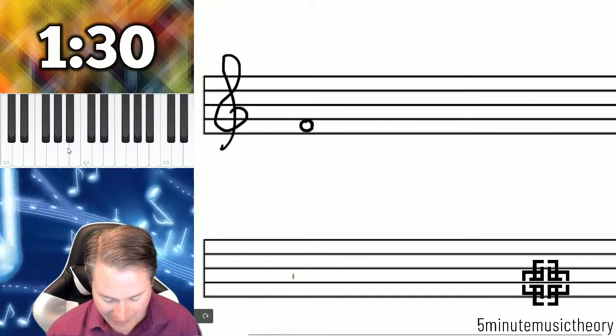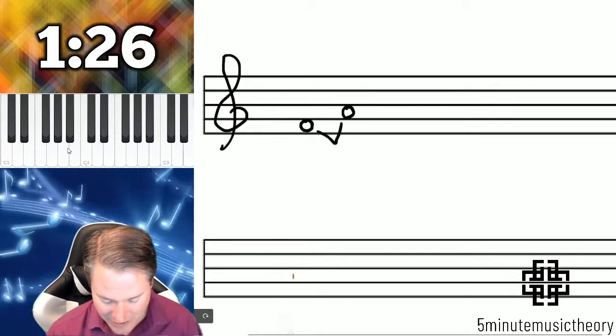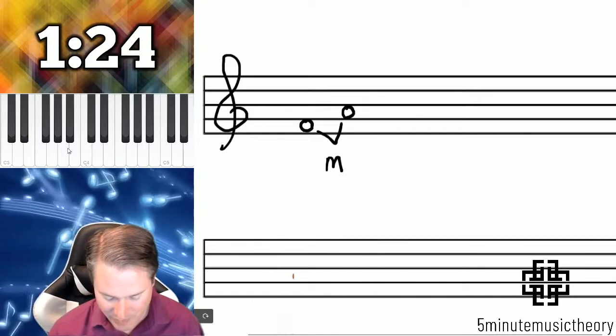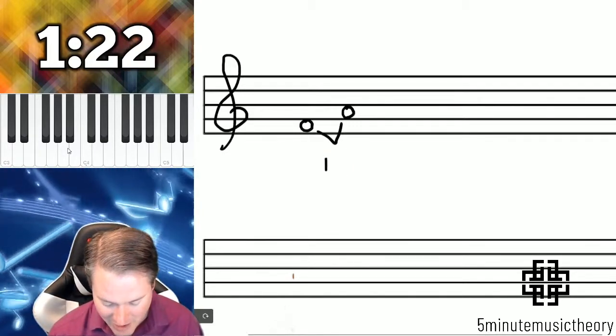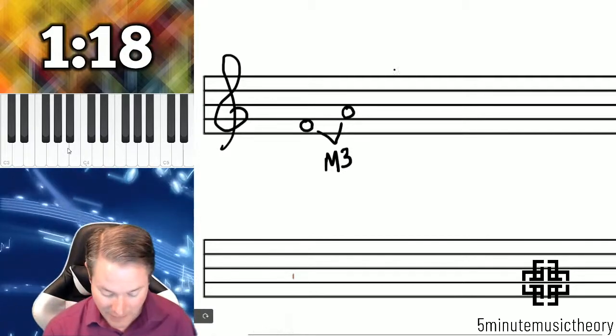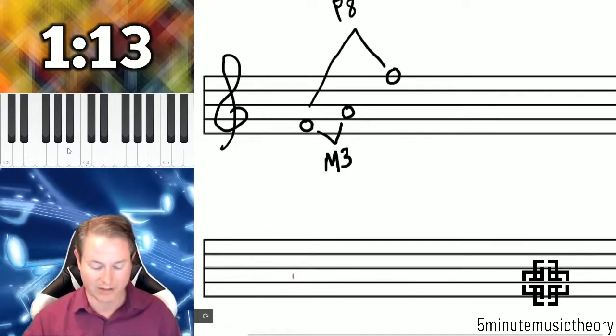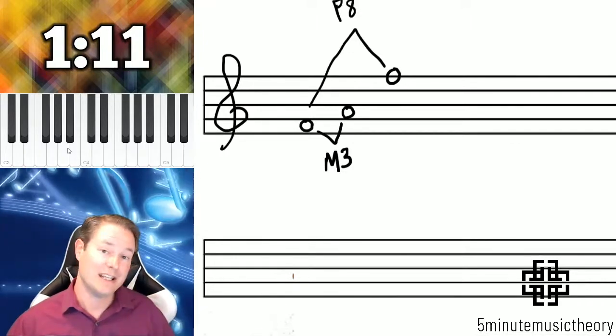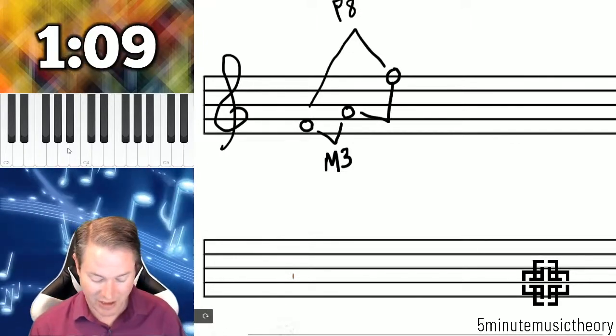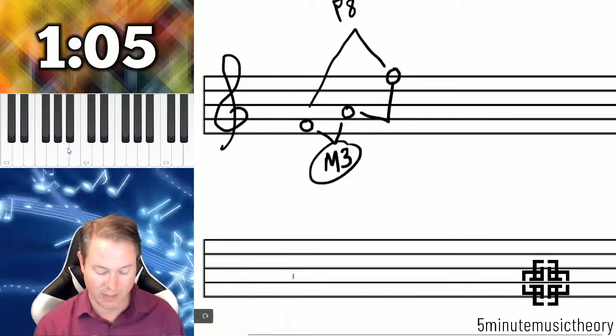So if I take an F here, and then I write an A, this interval is a major third from F to A. Now, if I go up here to an octave, F to F, we know that's a perfect octave. So the logic is that the interval that's left here, from the A up to the F, should be the complement of a major third.